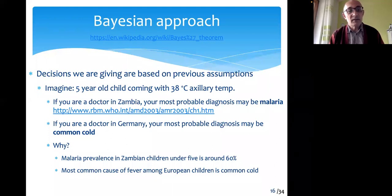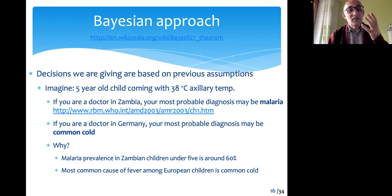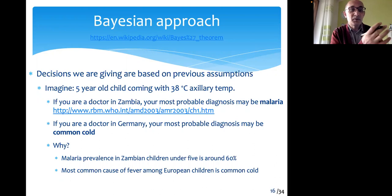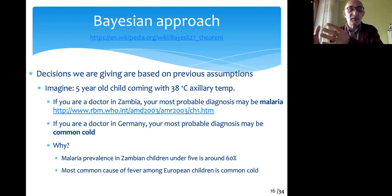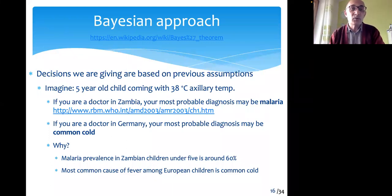But actually, Thomas Bayes suggested another approach approximately 200 years ago. He suggested that it's better to use the previous probability — the pretest probability — before you conduct a test. You combine this with the result of the test to come to a post-test probability. That's called the Bayesian approach.